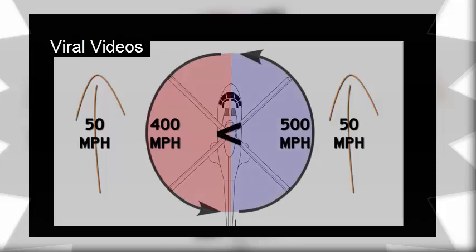In this instance, we have a hundred mile per hour difference in the relative speed of the advancing and retreating blades. This is why the advancing blade generates more lift than the retreating blade.